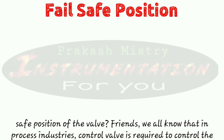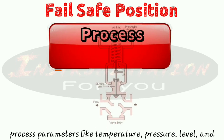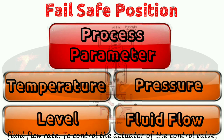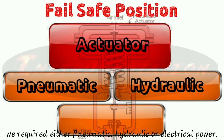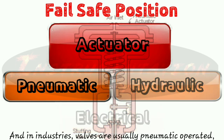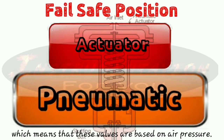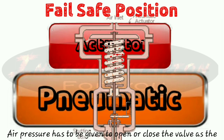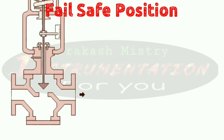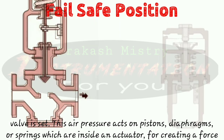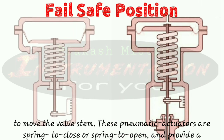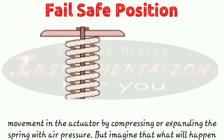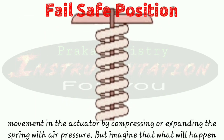We all know that in process industries, a control valve is required to control process parameters like temperature, pressure, level, and fluid flow rate. To control the actuator of the control valve, we require either pneumatic, hydraulic, or electrical power. In industries, valves are usually pneumatically operated, meaning they are based on air pressure. This air pressure acts on a piston, diaphragm, or springs inside the actuator to create a force that moves the valve stem. These pneumatic actuators are spring-to-close or spring-to-open, and provide movement by compressing or expanding the spring with air pressure.